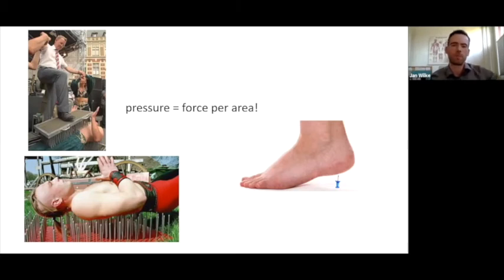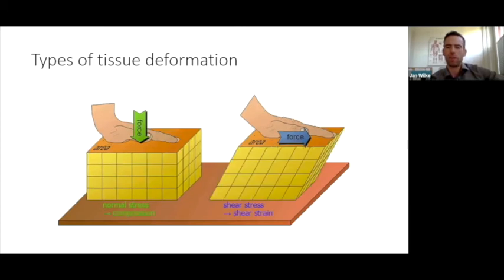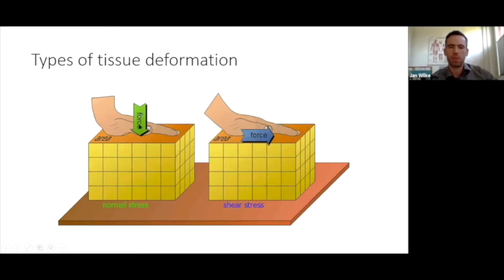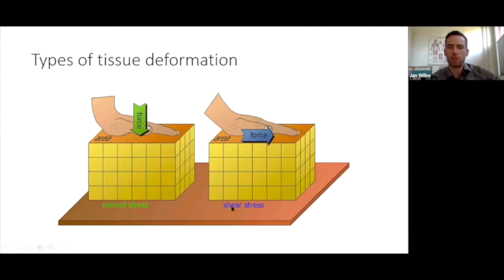We have to look at how foam rolling may affect our tissues. From a mechanical point of view, there are two types of tissue deformation. The first is compression: on the left side, you can see a downward force which compresses the tissue. On the right side, there is shear strain, where the upper part of the tissue moves in the direction the hand is pushing while the lower layer stays more or less the same — creating a shearing motion between the upper and lower layers.